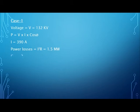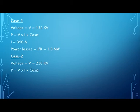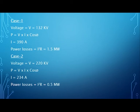In case two, the power transmission voltage is 220 kV. Using the same formula, the value of current is 234 amperes — much lower than in case one. The power losses in this case are 0.5 megawatts. We can clearly see that power losses decrease by almost 300 percent compared to case one when we use 220 kV instead of 132 kV.